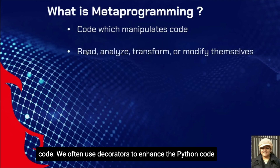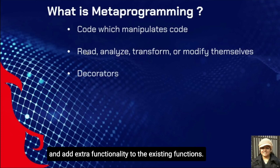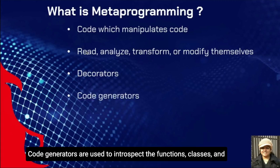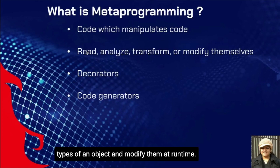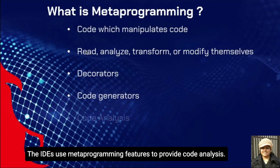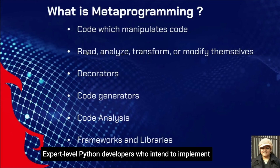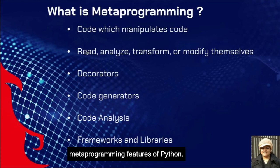We often use decorators to enhance Python code and add extra functionality to existing functions. These decorators are part of metaprogramming in Python. Code generators are used to introspect functions, classes, and types of an object and modify them at runtime. IDEs use the metaprogramming feature to provide code analysis. Expert-level Python developers who intend to implement frameworks and their own libraries often use the metaprogramming feature of Python.